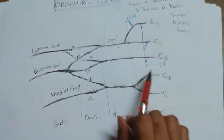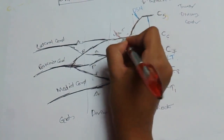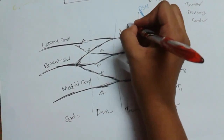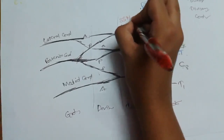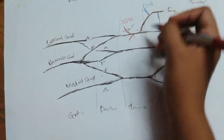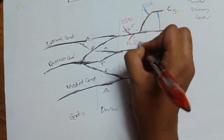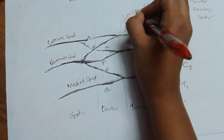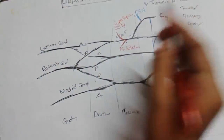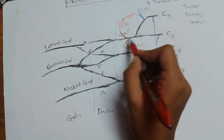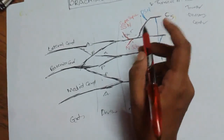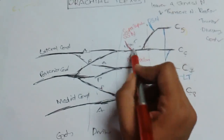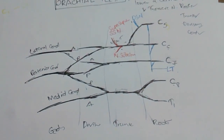From the trunks, there are only two branches. From the upper trunk: one is the suprascapular nerve — not subscapular, it is suprascapular — and the other is the nerve to subclavius. So from the upper trunk, the two branches are the suprascapular nerve and the nerve to subclavius.